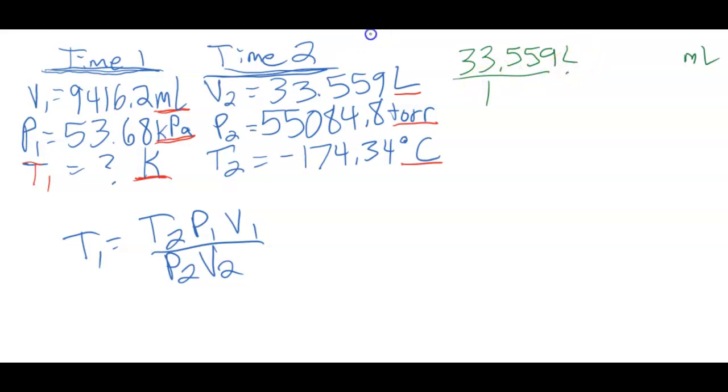So let's start by converting our 33.559 liters to milliliters. Done this conversion a lot. I'm not going to go over this in too much detail. So we have for every one milliliter, we have 10 to the negative third liters. So I am going to have 33,559 milliliters.